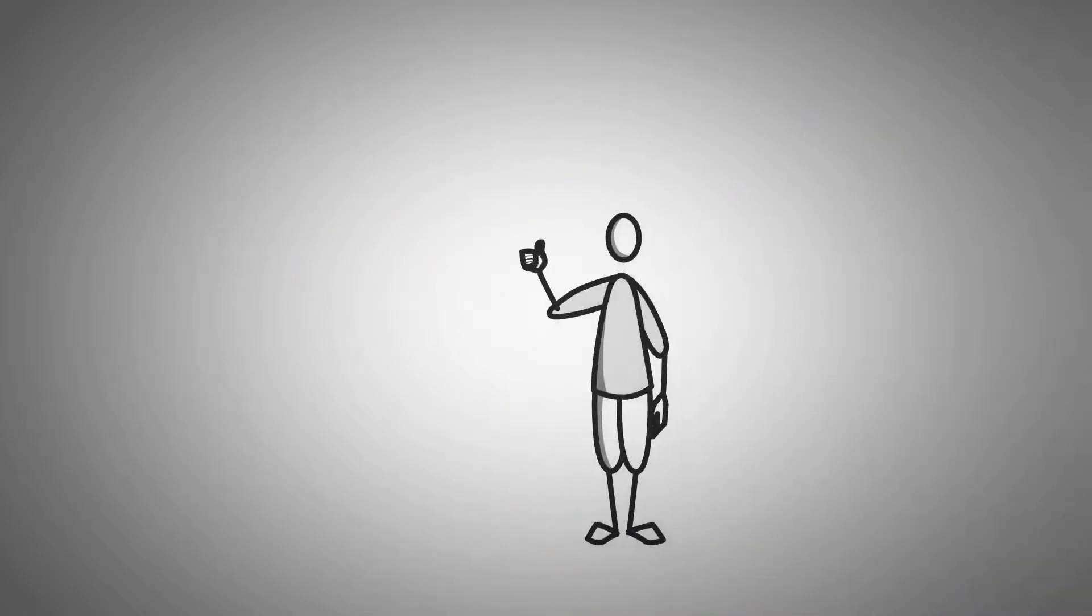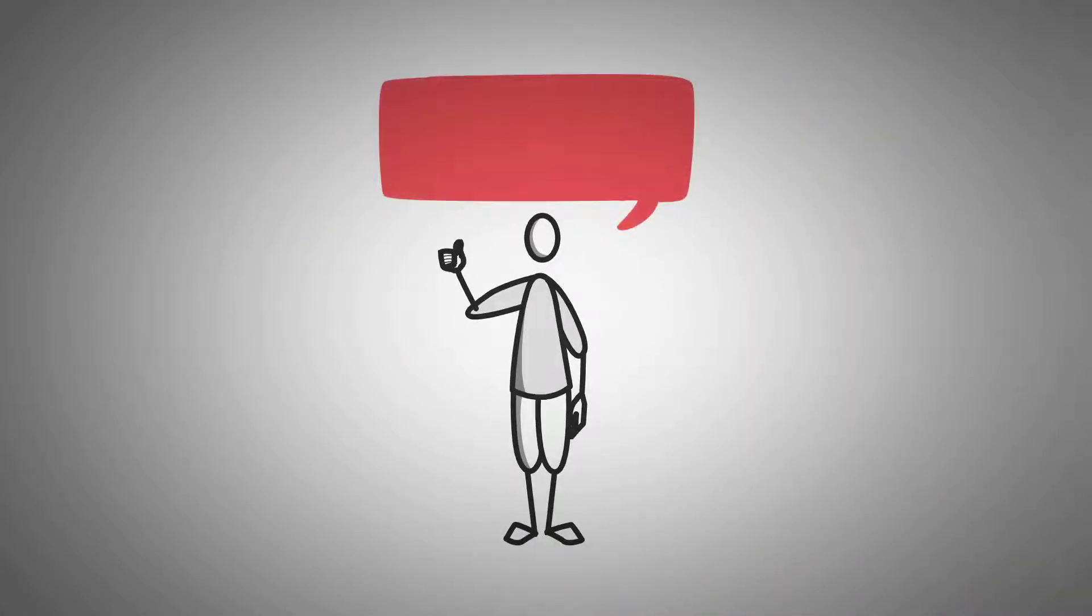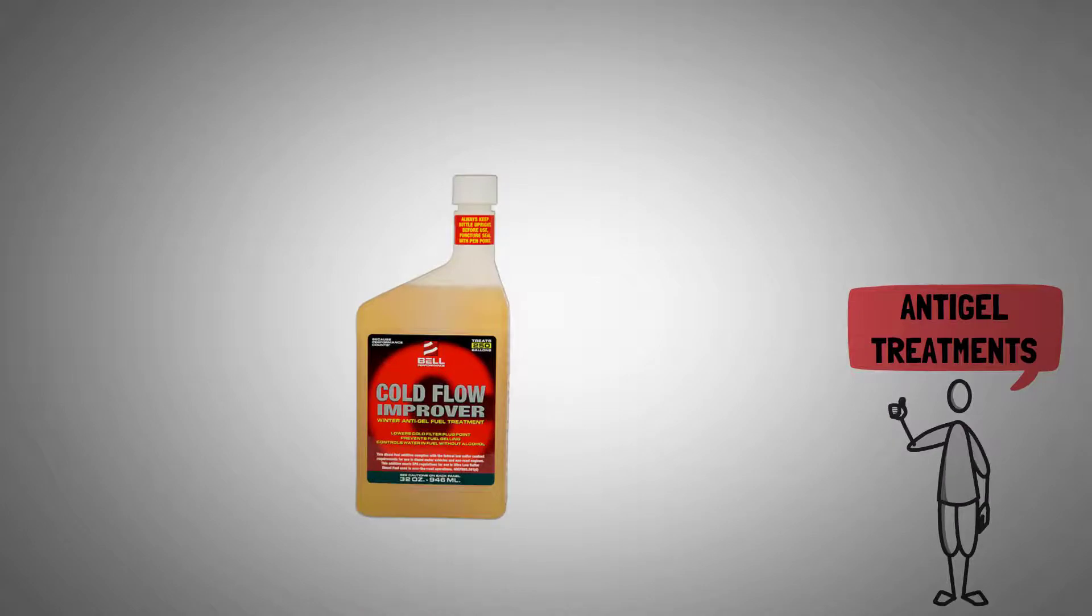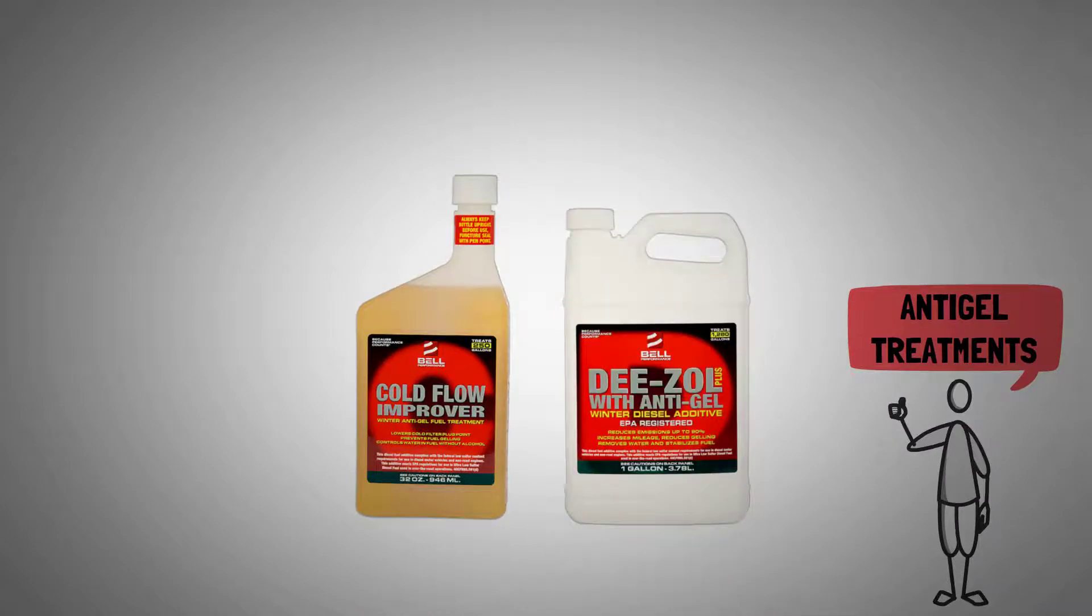The alternative to using kerosene for lowering gelling temperature are anti-gel treatments. These products come in different trade names, like Cold Flow Improver and Dissol Plus from Bell Performance.